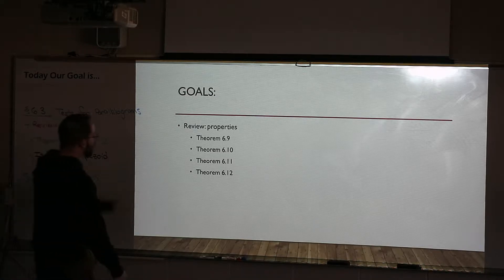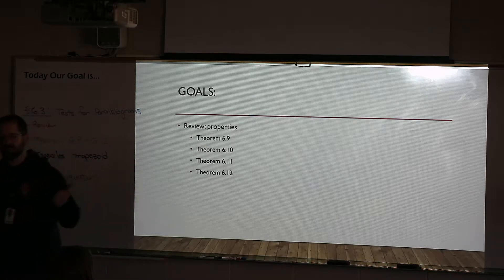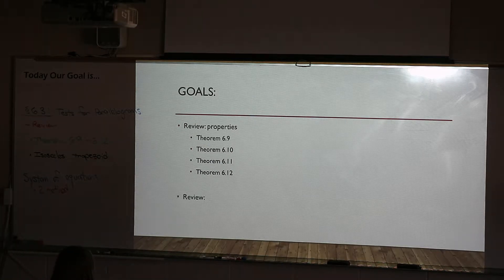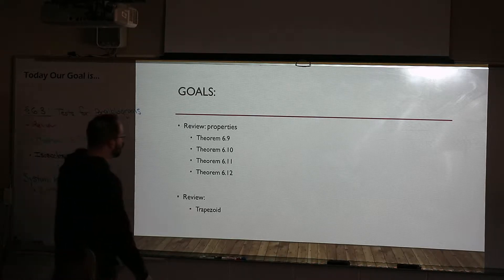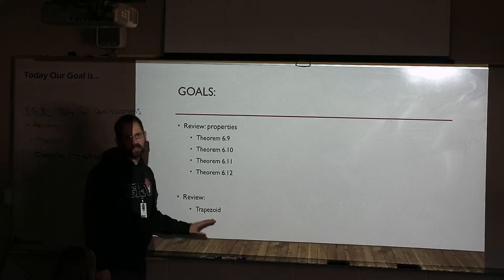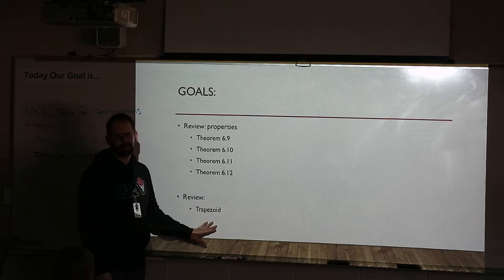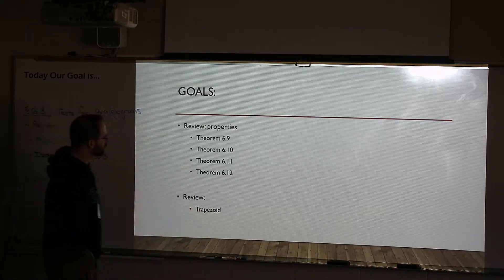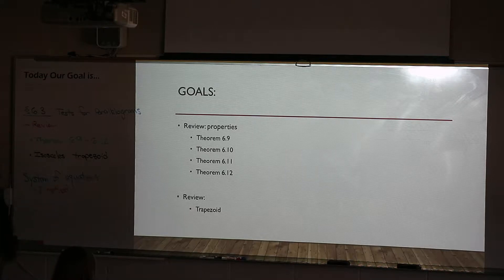We're going to go through a quick review. When we hit 6-12, I do want to review the idea of a trapezoid, because that is a completely different shape than what we've been working with. We will eventually get to the properties on those — that will be around section 6-5 or 6-6.